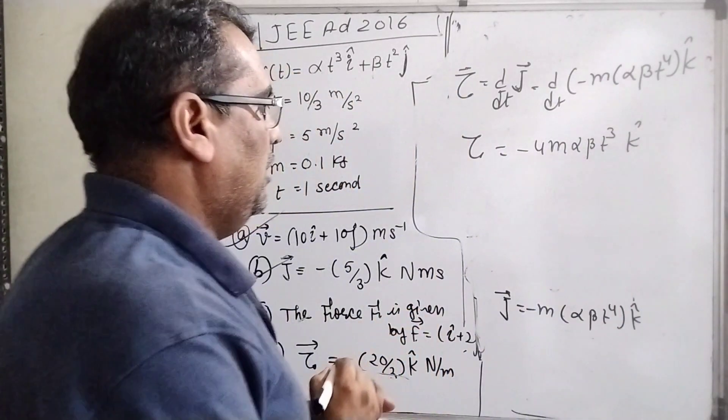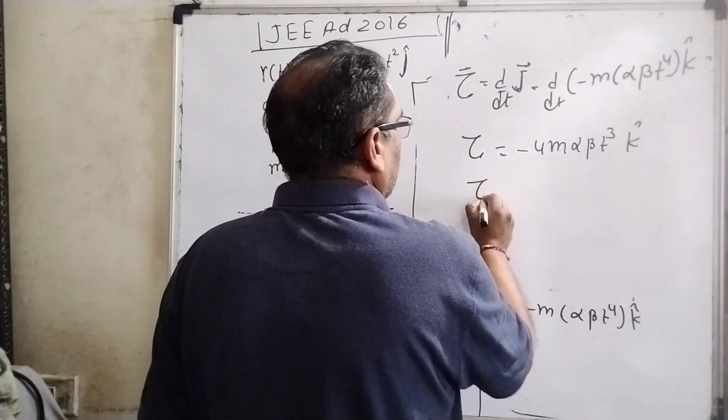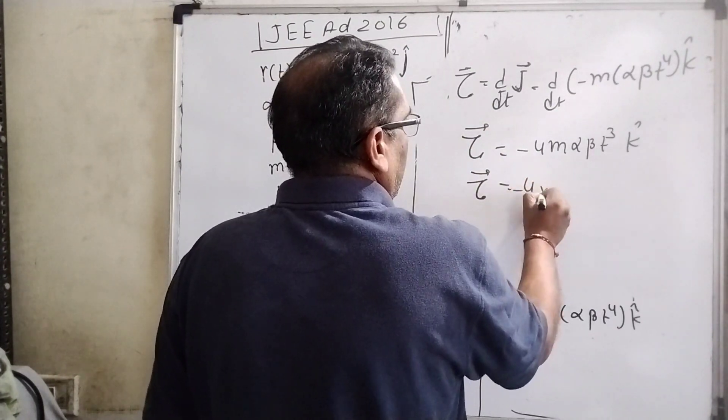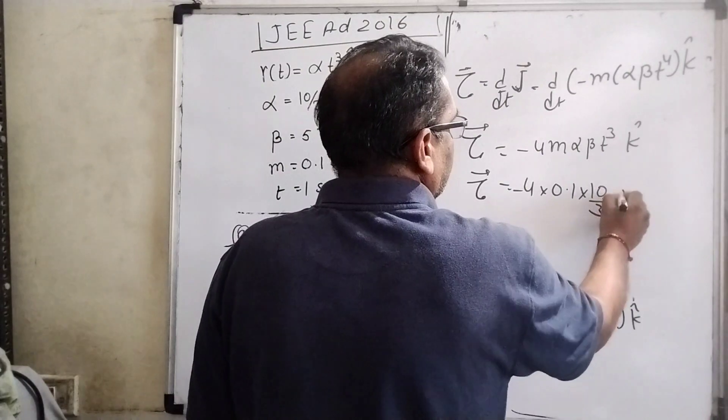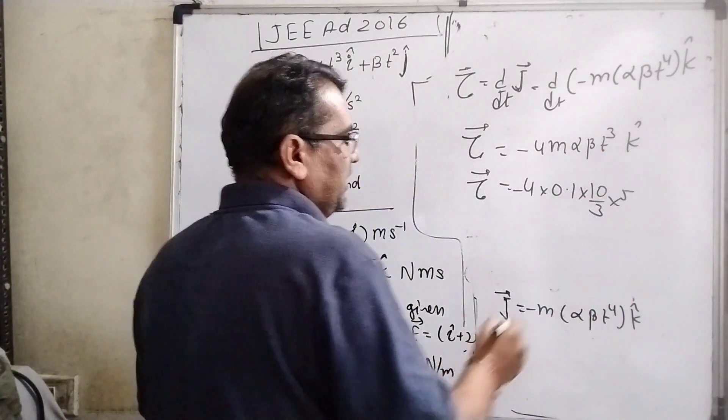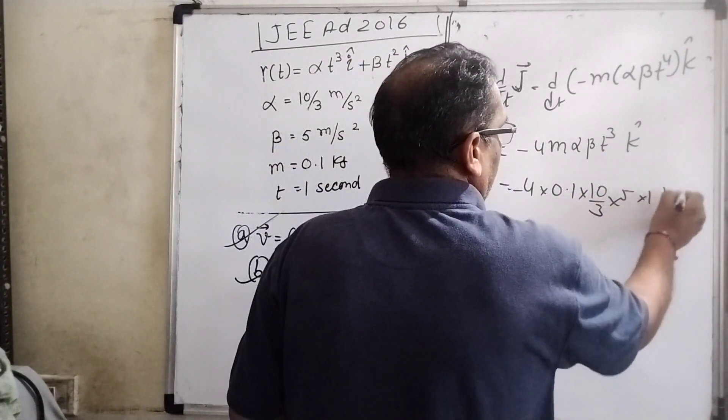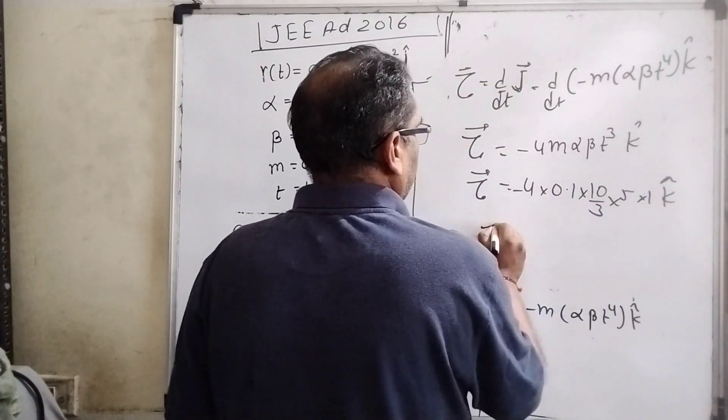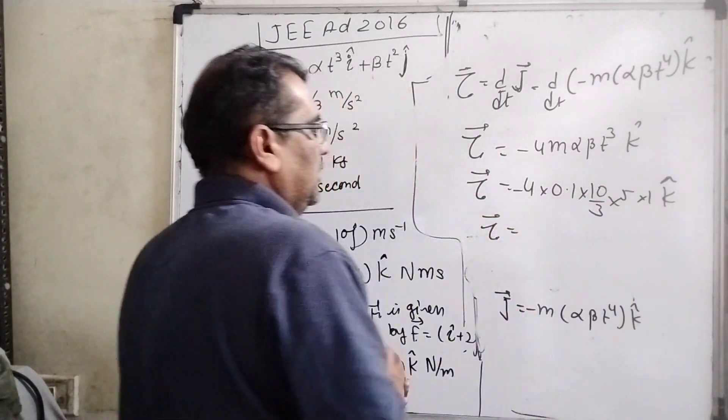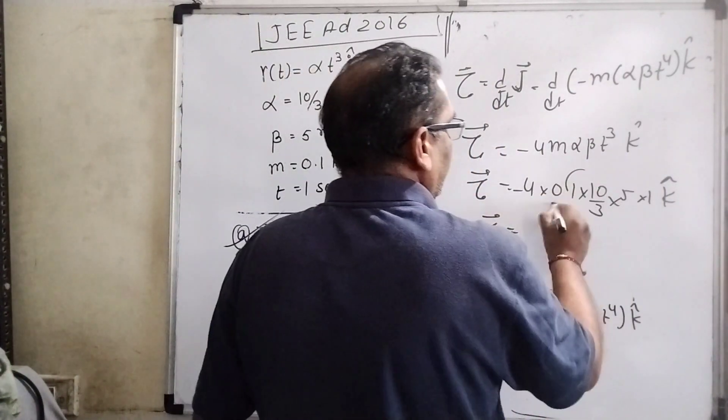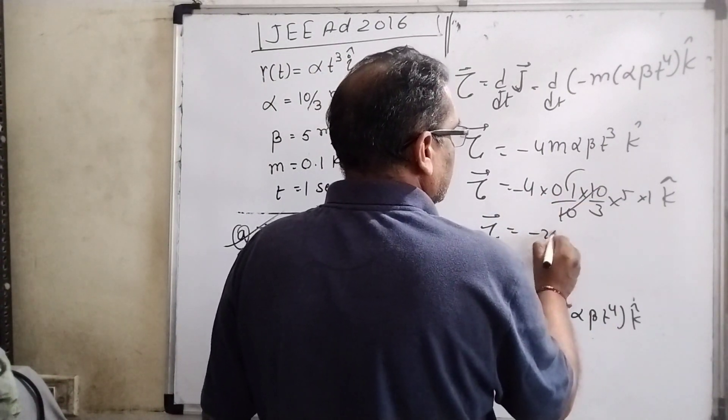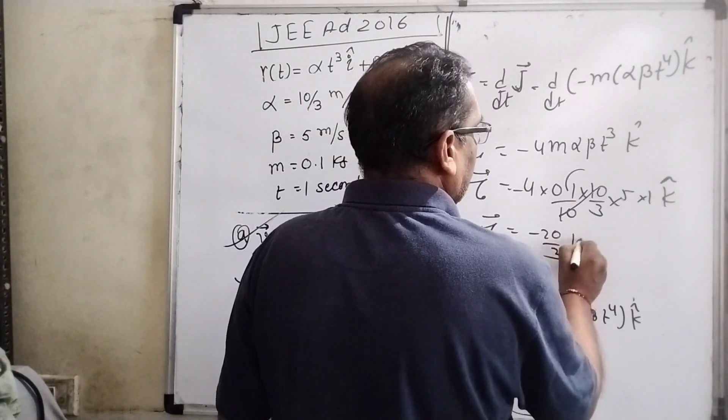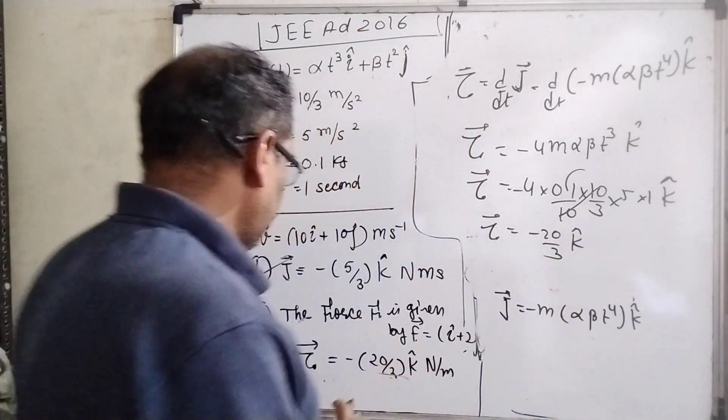Now substitute all these values. What is m? 0.1. α is 10/3, β is 5, and 1 cubed is 1, k unit vector. When 0.1 is removed, then minus 4 × 5 equals minus 20/3 k cap. Now let's see. Yes, option D is also correct.